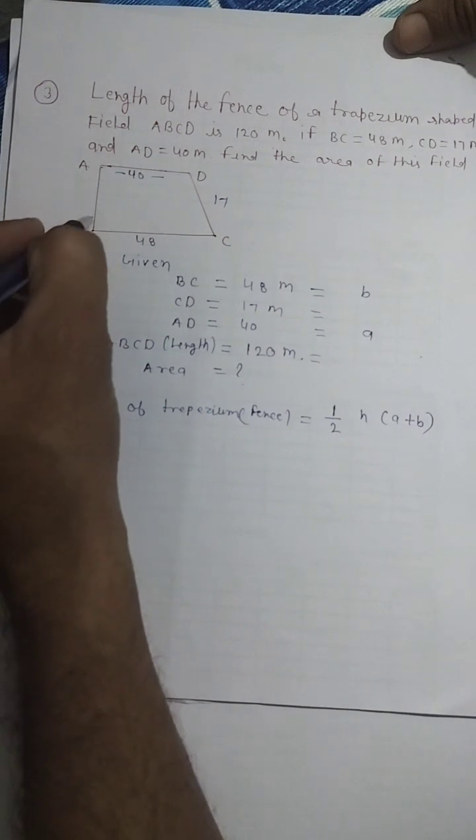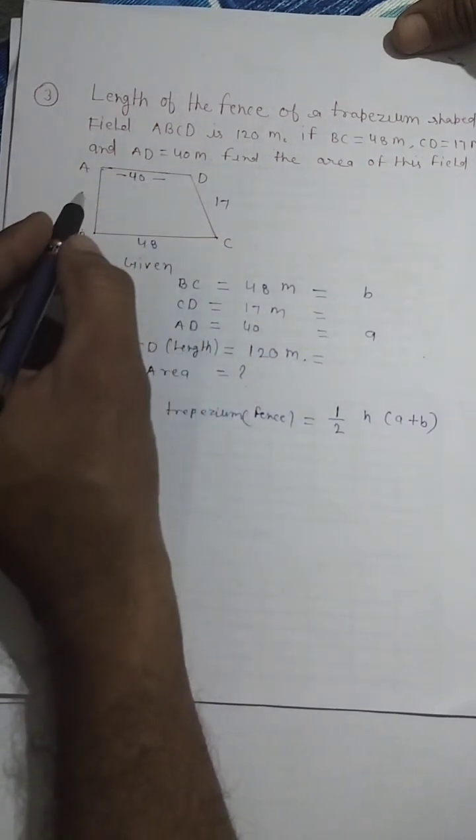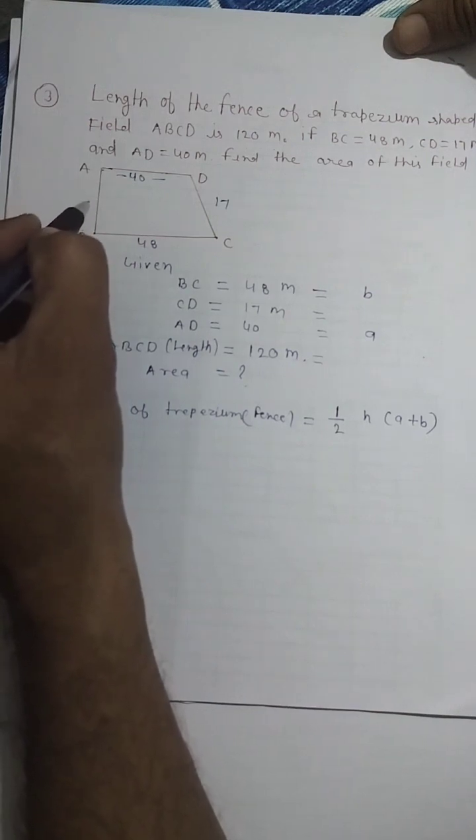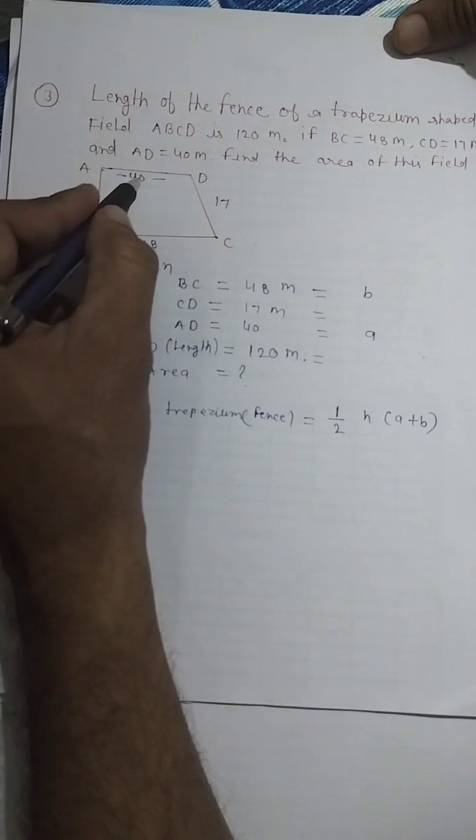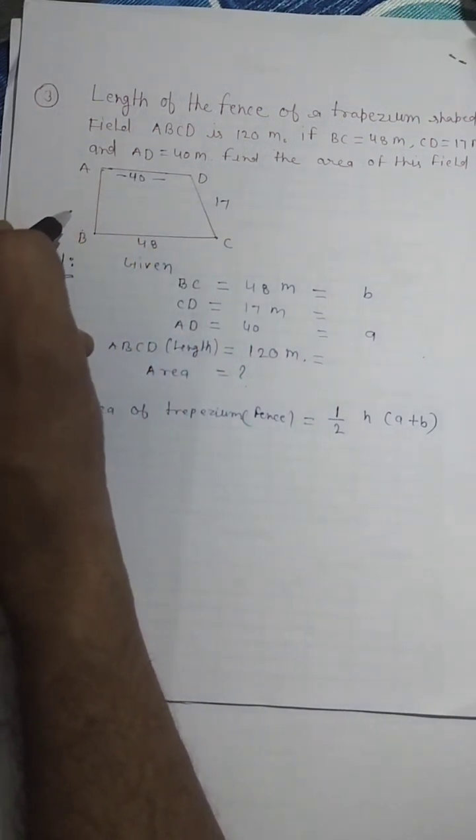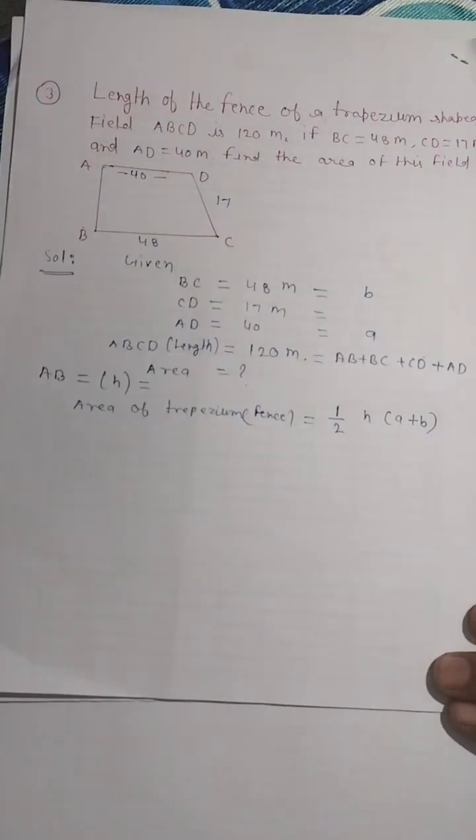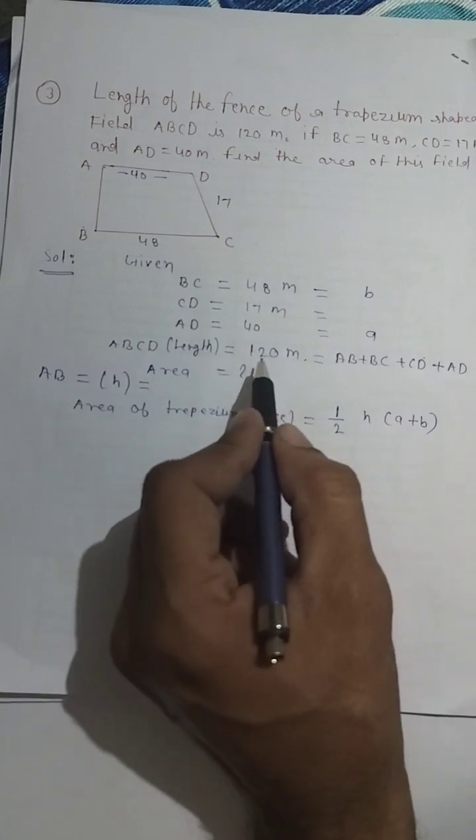We need the perpendicular height, but that side is not given. That's why we have the total length ABCD. We need to find AB. The total side is 120 meters.